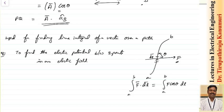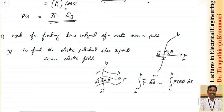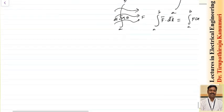Another application: let us assume some field is passing and I want to integrate from point A to point B. You take the differential length dL, and let the angle between f and dL be theta. The same way, you can do the integration using f dot dL. This is one of the applications — we will see the detailed analysis once we go into potential and those topics.